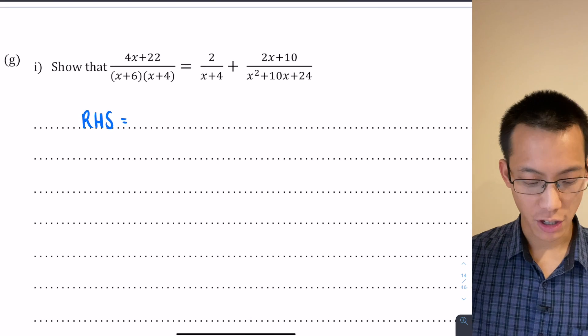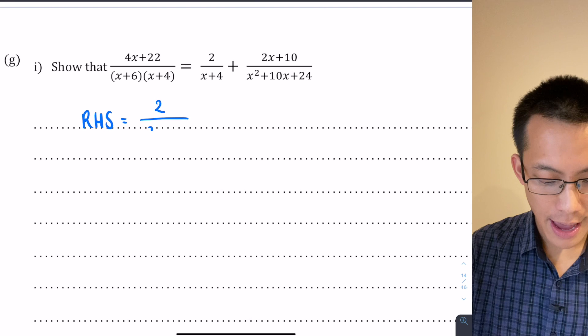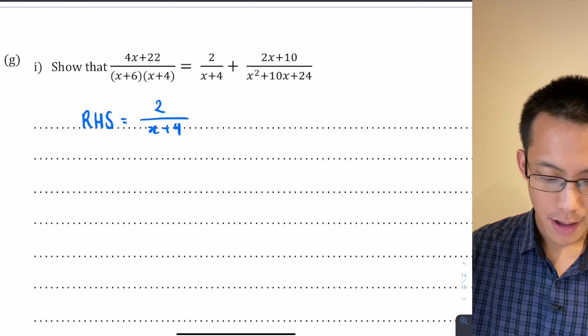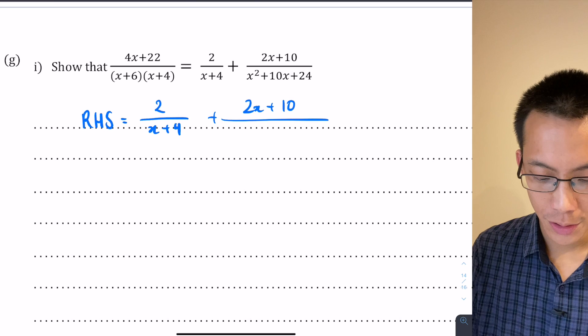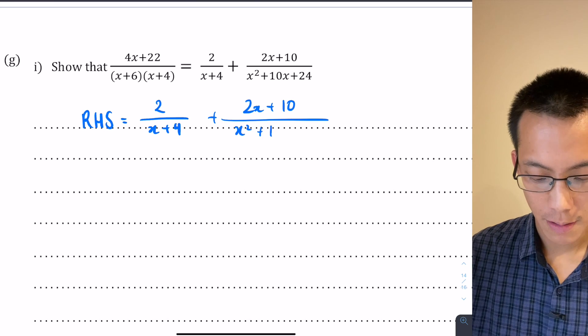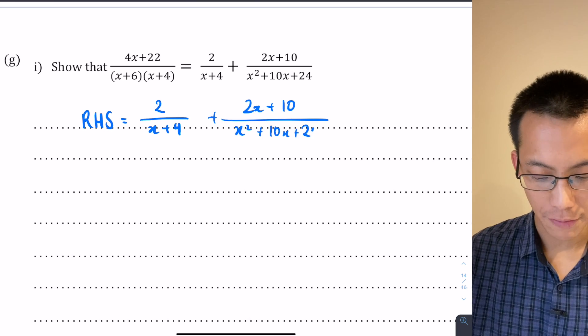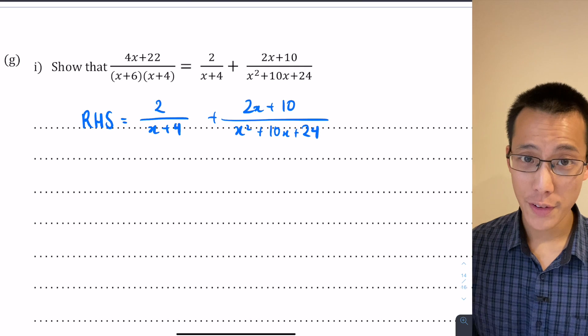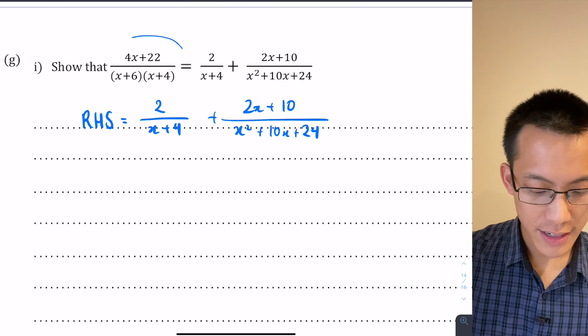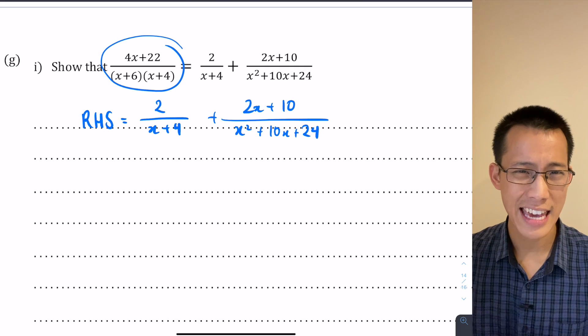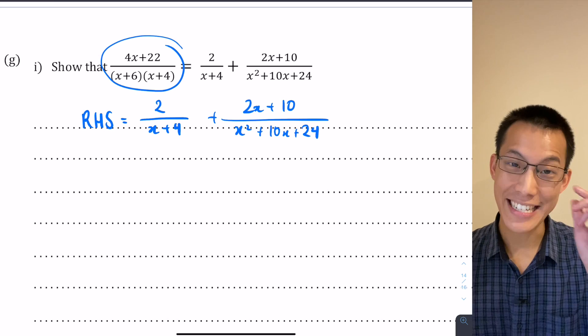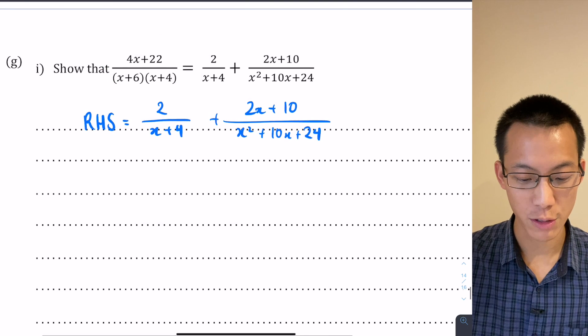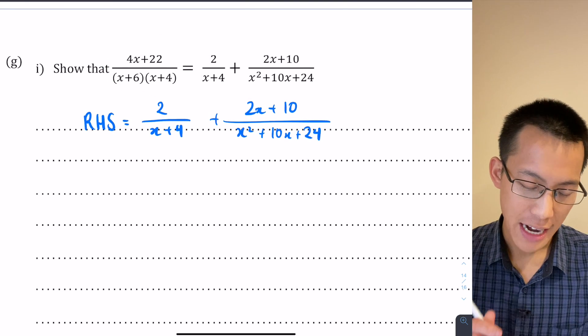I'm going to write RHS equals, and I'm just going to quote it: 2 over (x+4) plus (2x+10) all divided by x² + 10x + 24. When you're proving one of these things, I know I want to end up at the left hand side, so I keep one eye on the algebra I'm manipulating and my other eye on my destination to make sure I'm getting closer at every step.